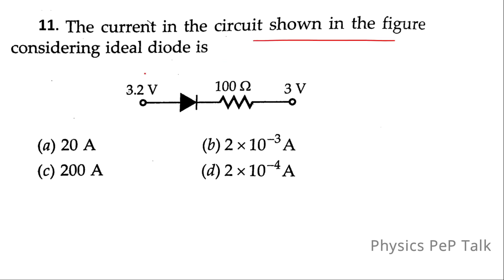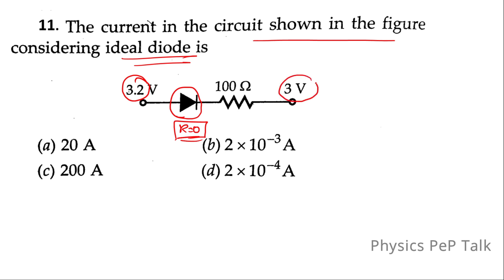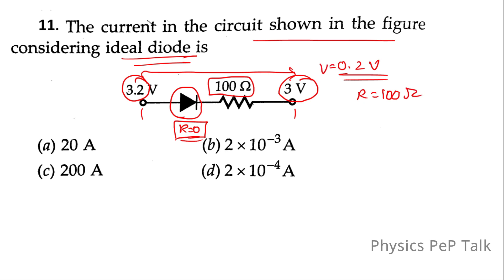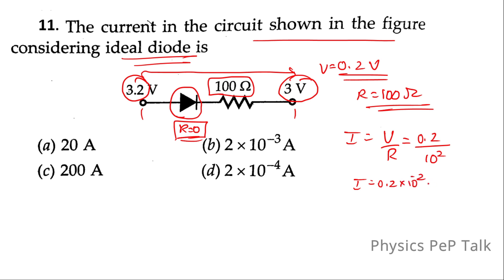The current in the circuit shown in the figure, considering an ideal diode — the resistance of an ideal diode is 0. The circuit has 3.2 volts and 3 volts, so the potential difference is 0.2 volts. The resistance R is 100 ohms. Therefore I = V/R = 0.2 / 100 = 0.2 × 10⁻² = 2 × 10⁻³ amps. Option B is the correct answer.